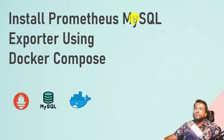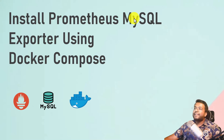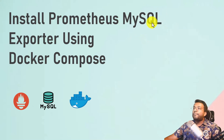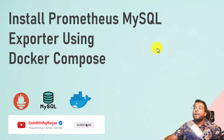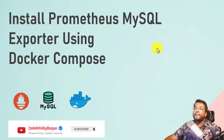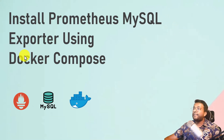MySQL, as most of you must be knowing, is a relational database system where you store the data for your application. There are multiple tables and we insert data, fetch data, and delete data from this MySQL database. There are some metrics which are very important related to MySQL — RAM usage, CPU usage, how indexes are being performed, and what are the slow queries. Knowing all these on a production system is very necessary because you need to have 99% uptime for your system.